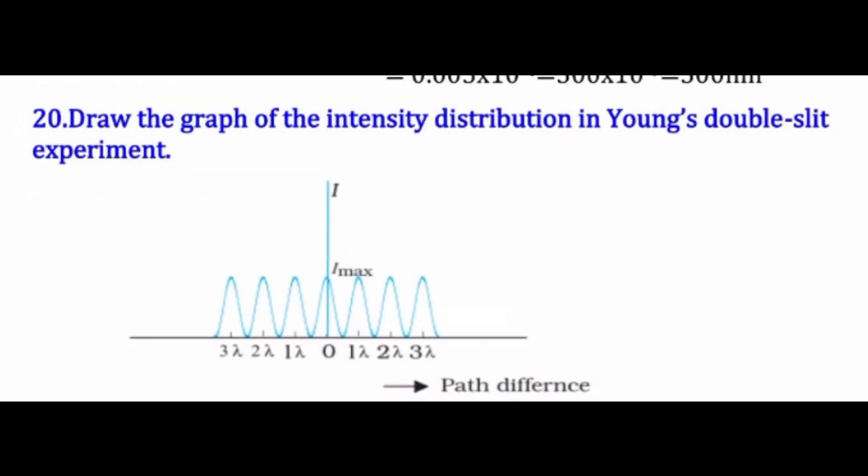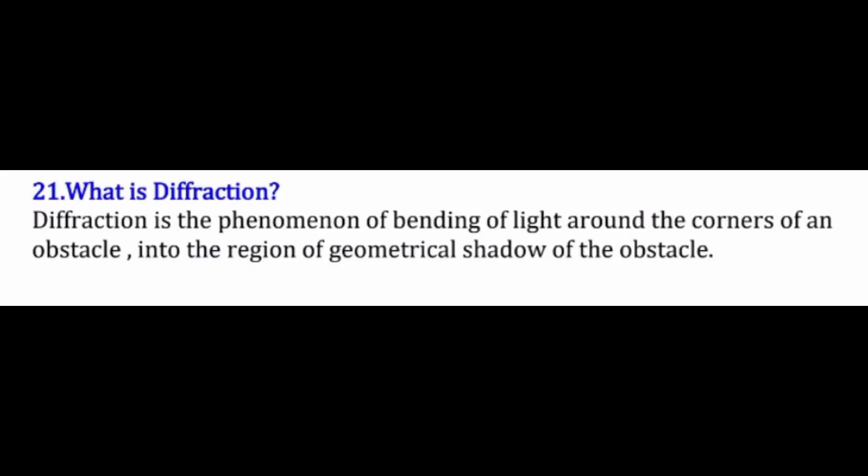The next question is: draw the graph of intensity distribution in Young's double slit experiment. We take path difference along the x-axis and intensity along the y-axis. That is the intensity distribution graph for Young's double slit experiment.